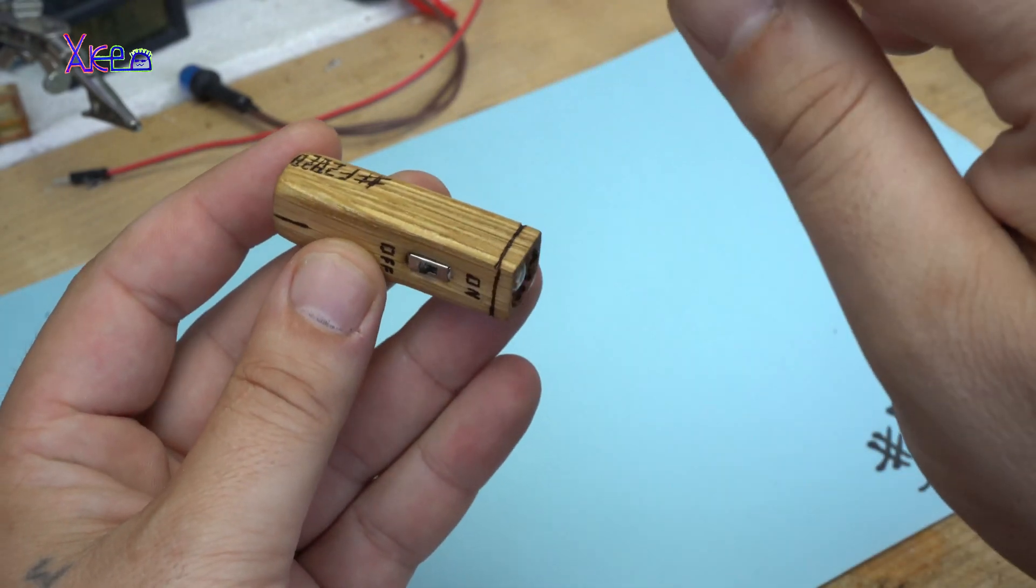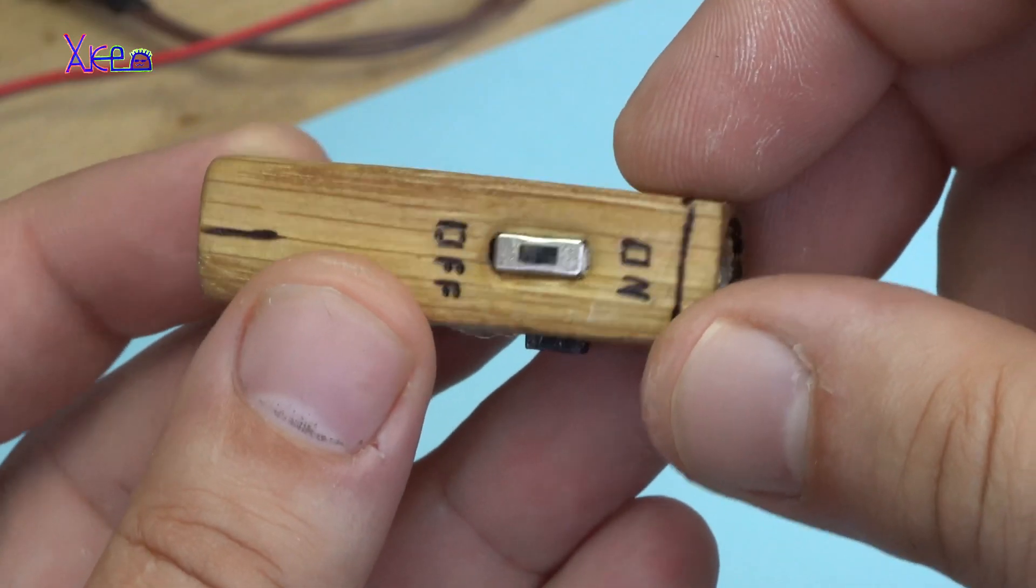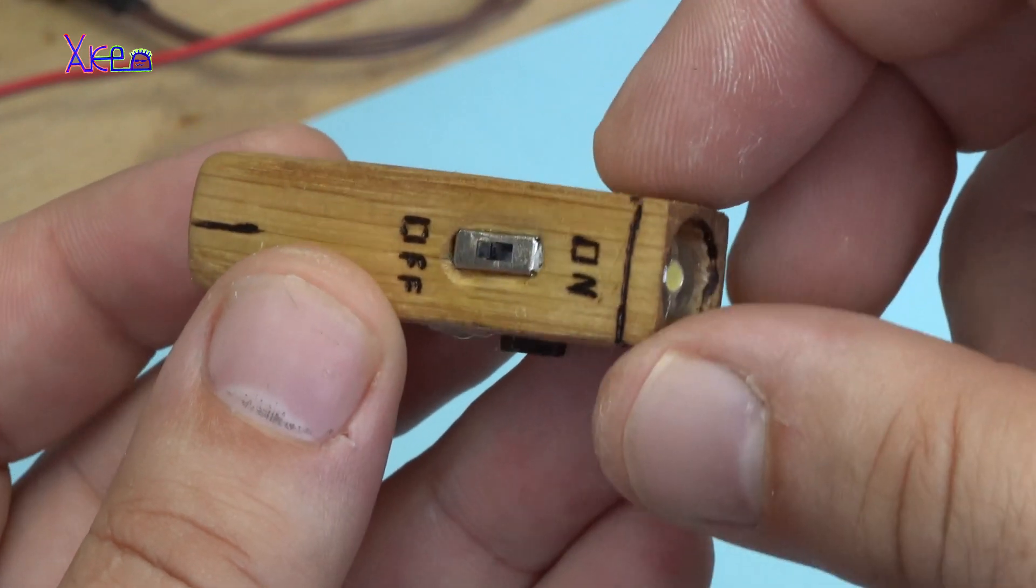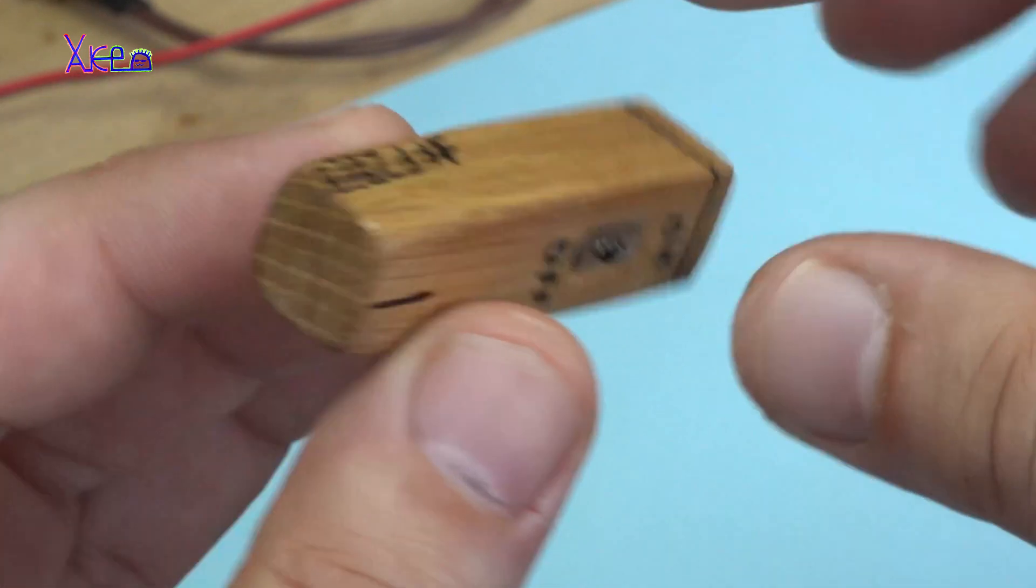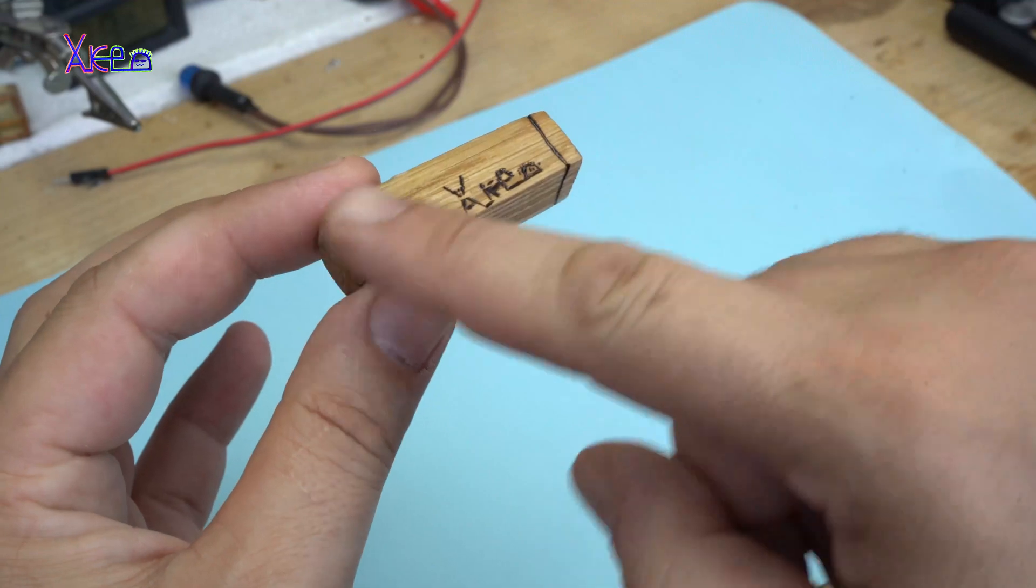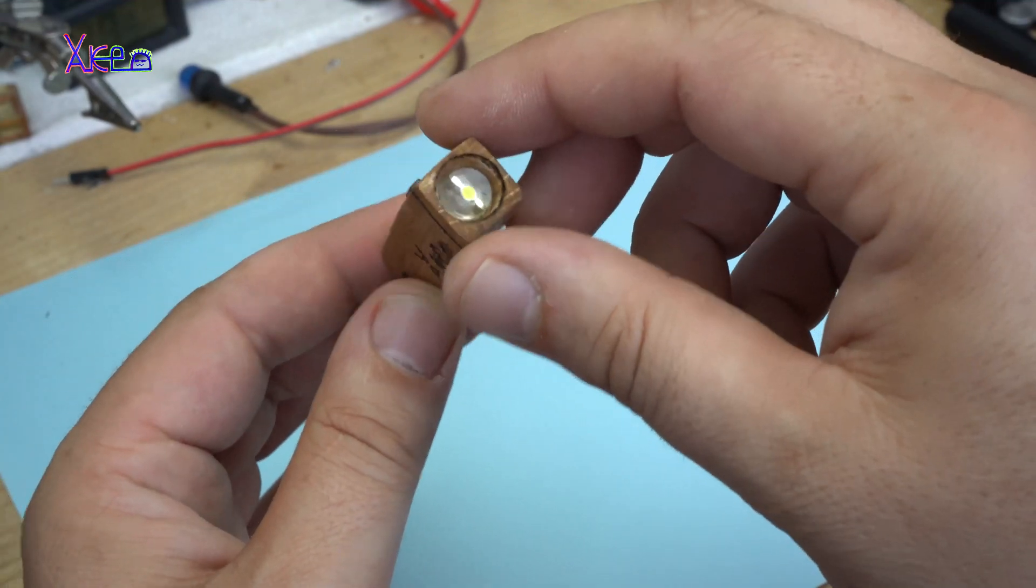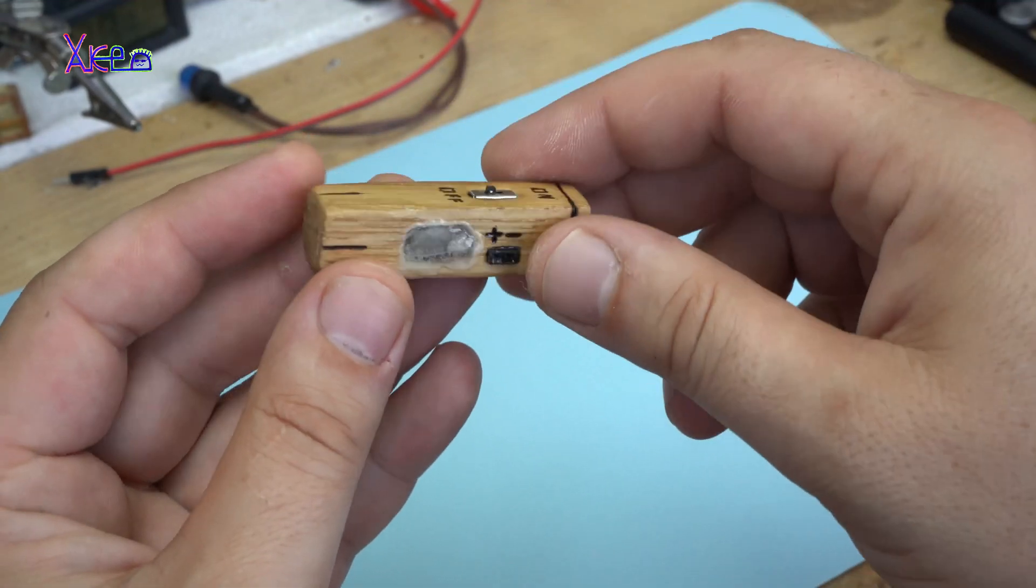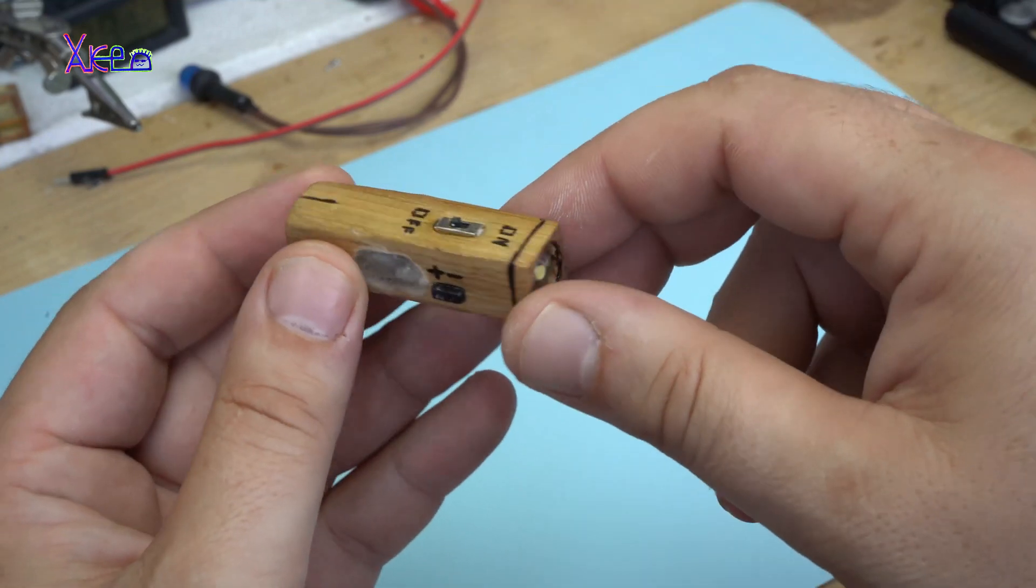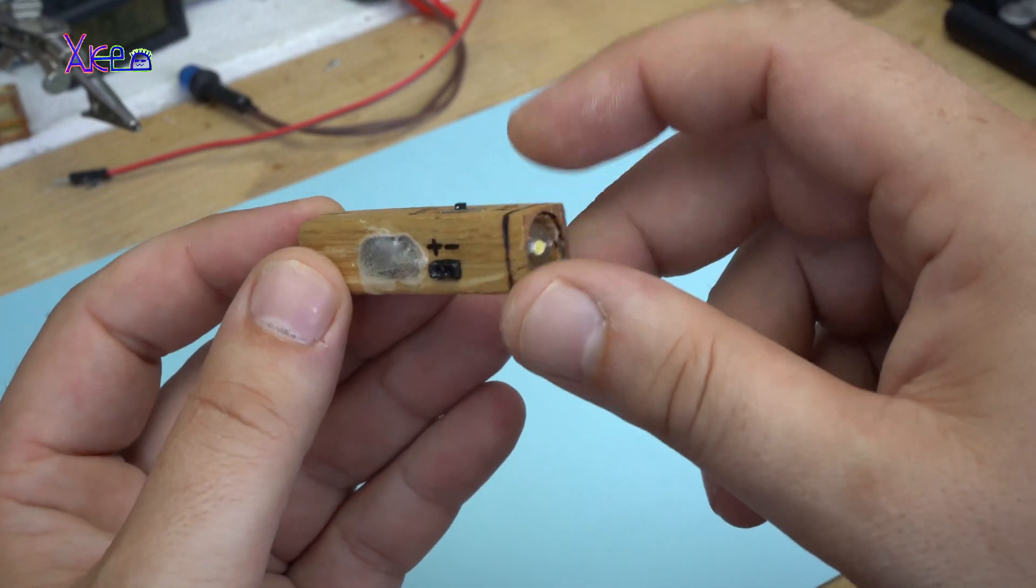As you can see it's a small gadget, small rechargeable gadget made from wood, from one piece of wood. And you guessed, this is a mini wooden flashlight.